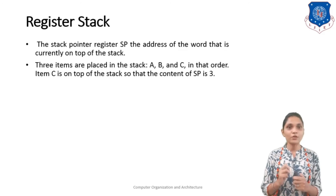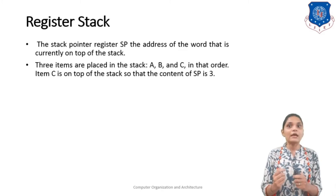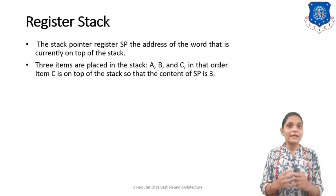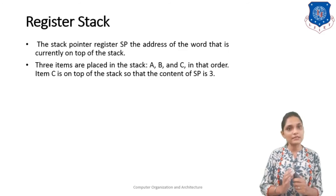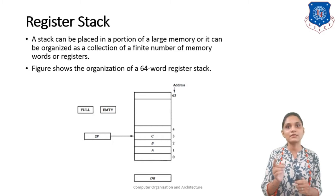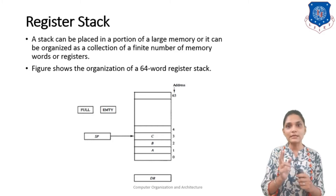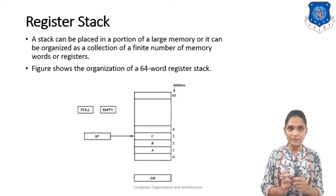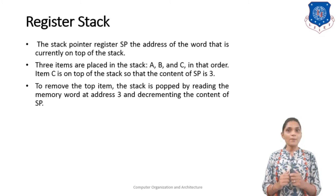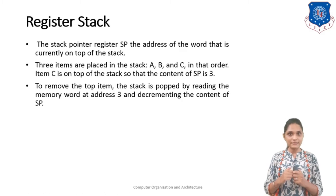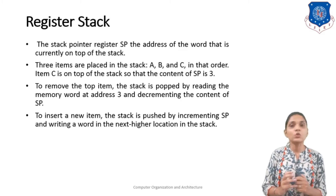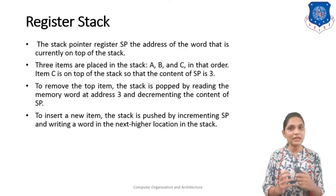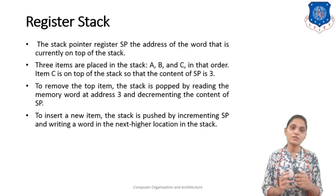The stack pointer SP holds the address of the word currently on top of the stack, so the stack pointer always points at the top. Three items A, B, and C are placed in that order, so C is on top at location 3 — the stack pointer's content is 3. To remove the top item, the stack is popped by reading the memory word at address 3 and incrementing the stack pointer by 1, so after popping C your stack pointer will be 2. To insert a new item, the stack is pushed by incrementing SP and writing the word in the next higher location.